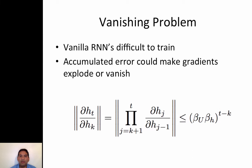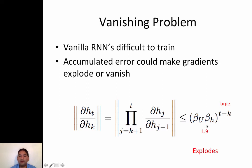One main inherent problem RNNs have is that they're difficult to train because of the exploding gradient. We can represent the error propagated through stochastic gradient descent as a product of partial derivatives of one layer with respect to the previous layer. Taking the norm, we put a threshold as the upper bound. As the number of time steps we need to go back is large and our error is very small, the error will vanish — or if the error is greater than one, it could explode. That's why it's difficult to train RNNs.